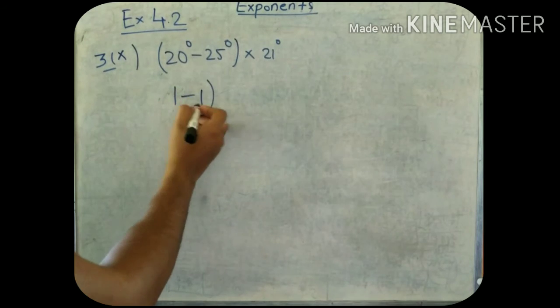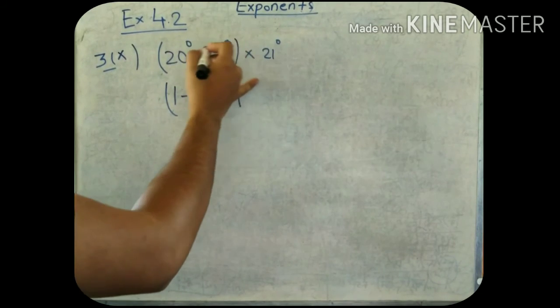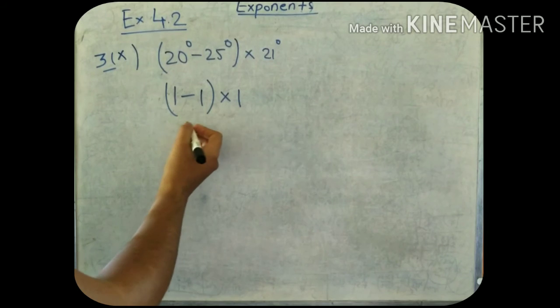1 minus 1, how will it be? 1 into 1. If all of these power is 0, so all of these are 1. What will this be?